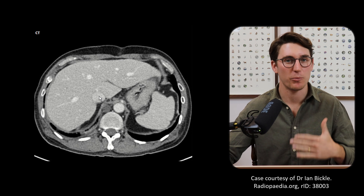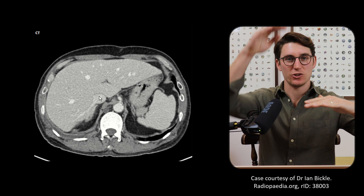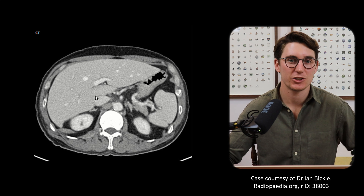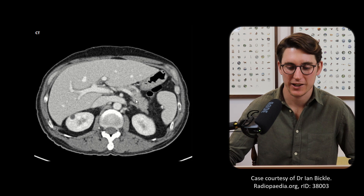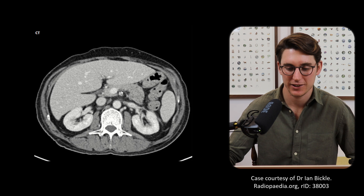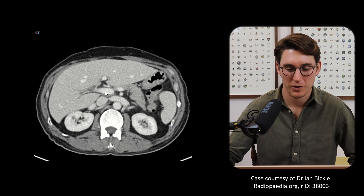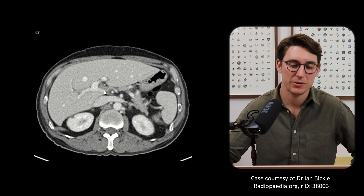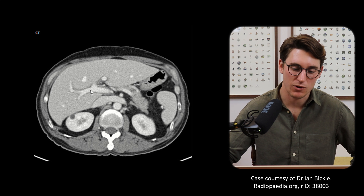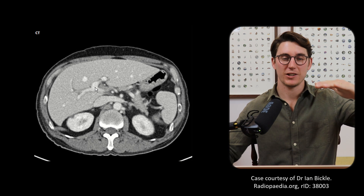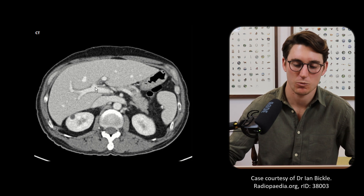Then we need to identify our portal vein to see where we're going to split those sections into a superior and inferior segment. Our portal vein lies anterior to our IVC, getting blood from our splenic vein and our SMV (superior mesenteric vein) to form the portal vein. The portal vein comes into the porta hepatis and divides into our left portal vein and right portal vein. Our right portal vein is slightly inferior to the left portal vein, and we use that as our horizontal level to separate our superior and inferior segments from one another.